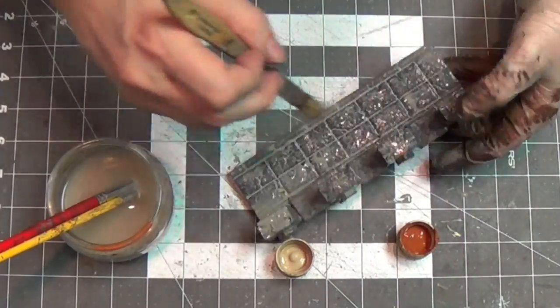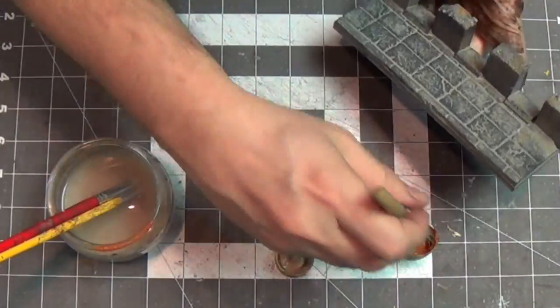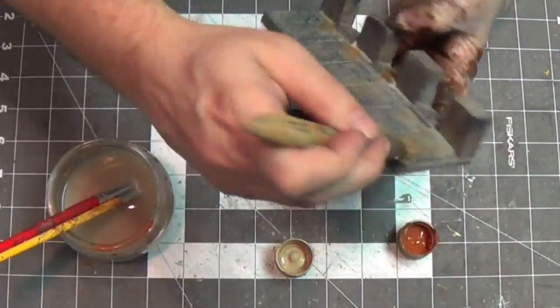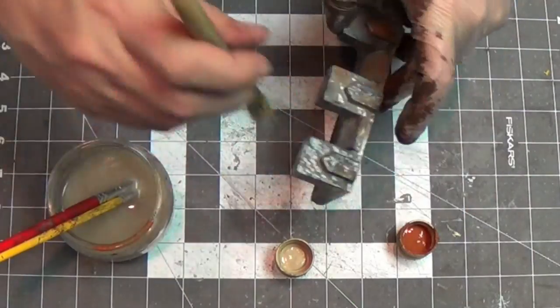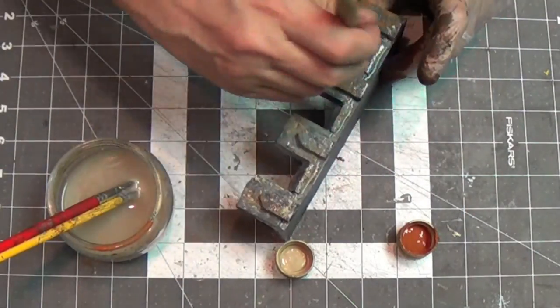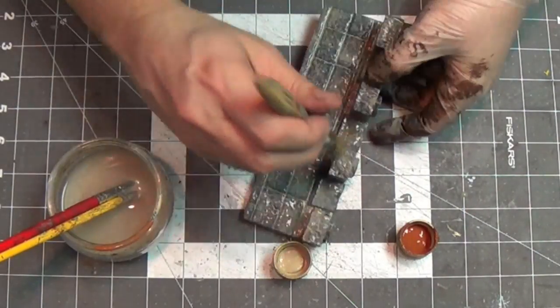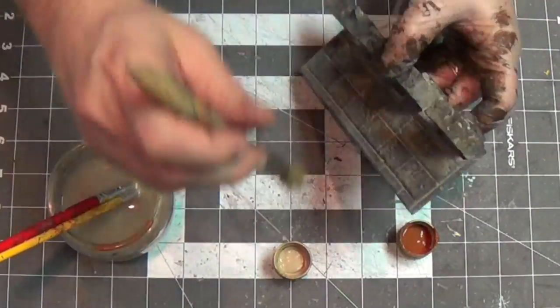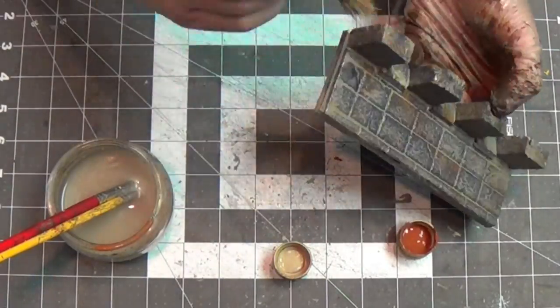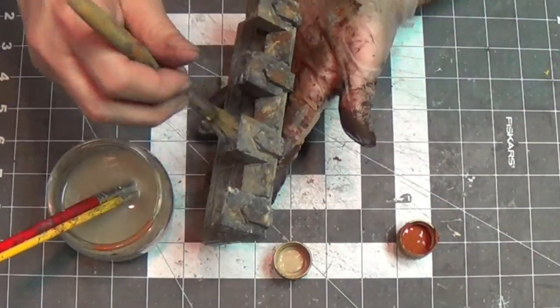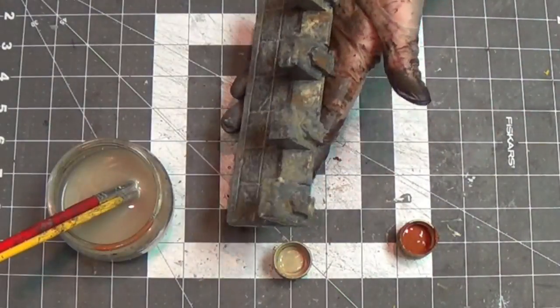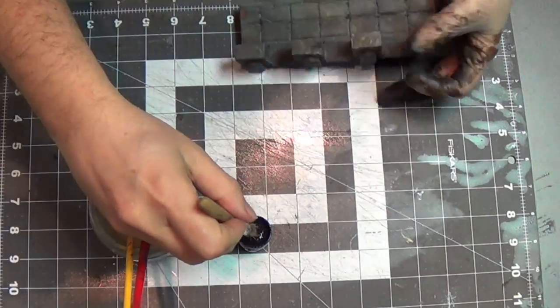Now I'm going to use some burnt sienna and tan, kind of stipple that on the wet surface. And that will give me a nice kind of stone look, so it's not just a homogenous kind of stone. It looks like it has different colors in it. Very cool. Looking good. Neat.